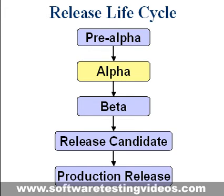Alpha. The alpha build of the software is the build delivered to the software tester — persons different from the software engineers, but usually internal to the organization or community that develops the software. In a rush to market, more and more companies are engaging external customers or value chain partners in their alpha testing phase. This allows more extensive usability testing during the alpha phase. In the first phase of testing, developers generally test the software using white box techniques. Additional validation is then performed using black box or grey box techniques by another dedicated testing team, sometimes concurrently.